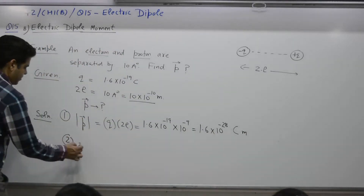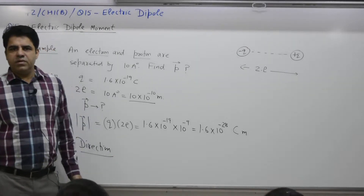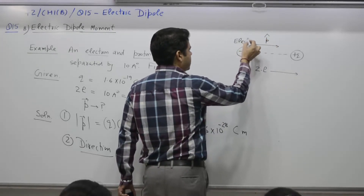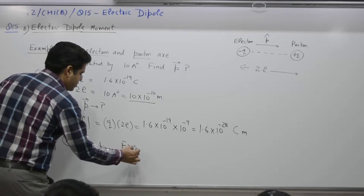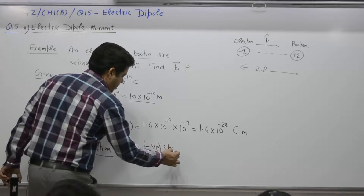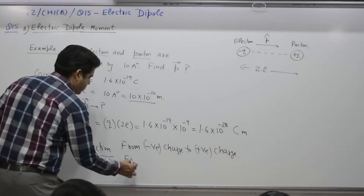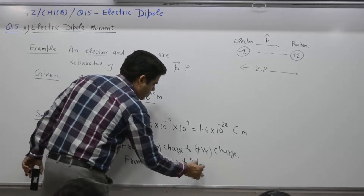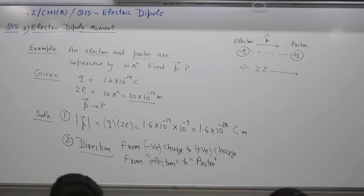Direction: The electric dipole moment direction is from negative to positive — that is, from the electron to the proton, from the negative charge towards the positive charge.